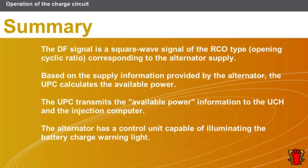In this chapter, we covered the following points. The DF signal is a square wave signal of the RCO type — opening cyclic ratio — corresponding to the alternator supply. Based on the supply information provided by the alternator, the UPC calculates the available power. The UPC transmits the available power information to the UCH and the injection computer.